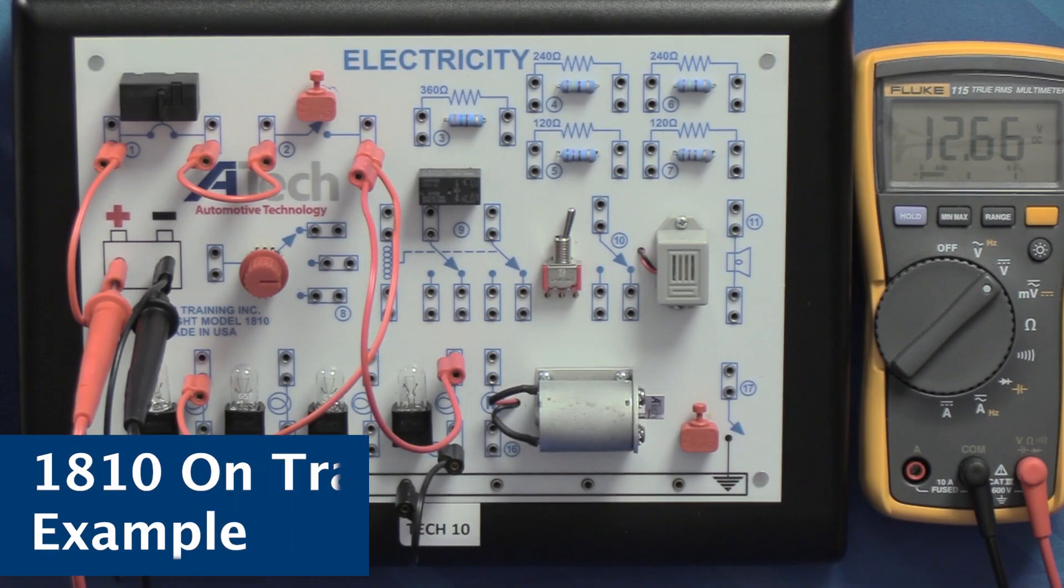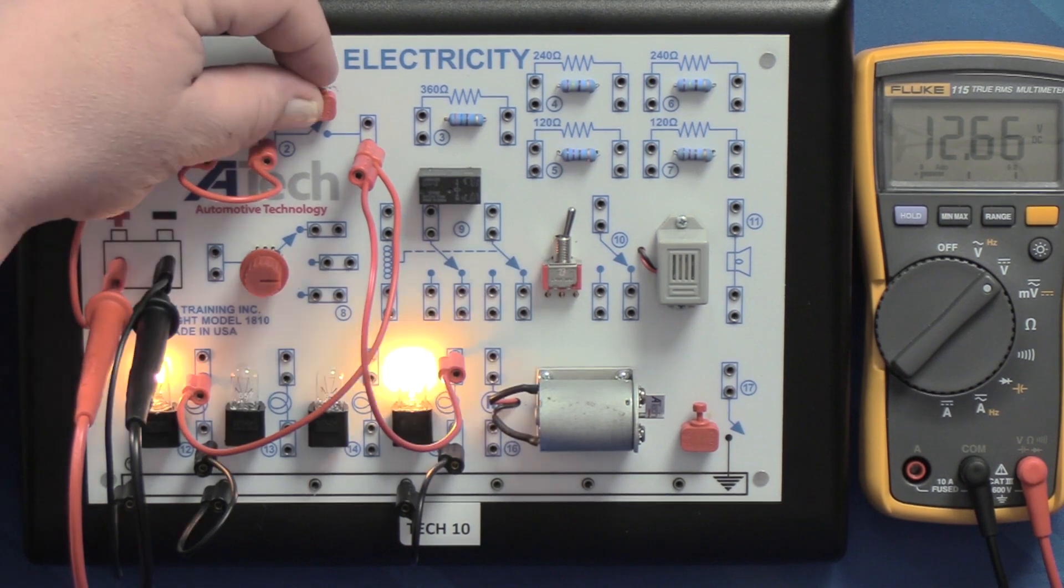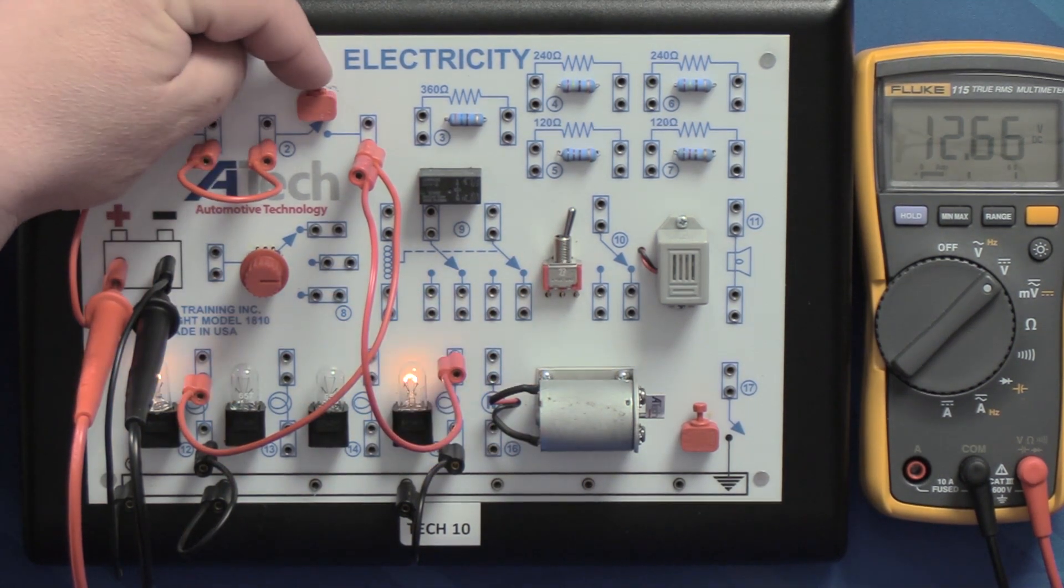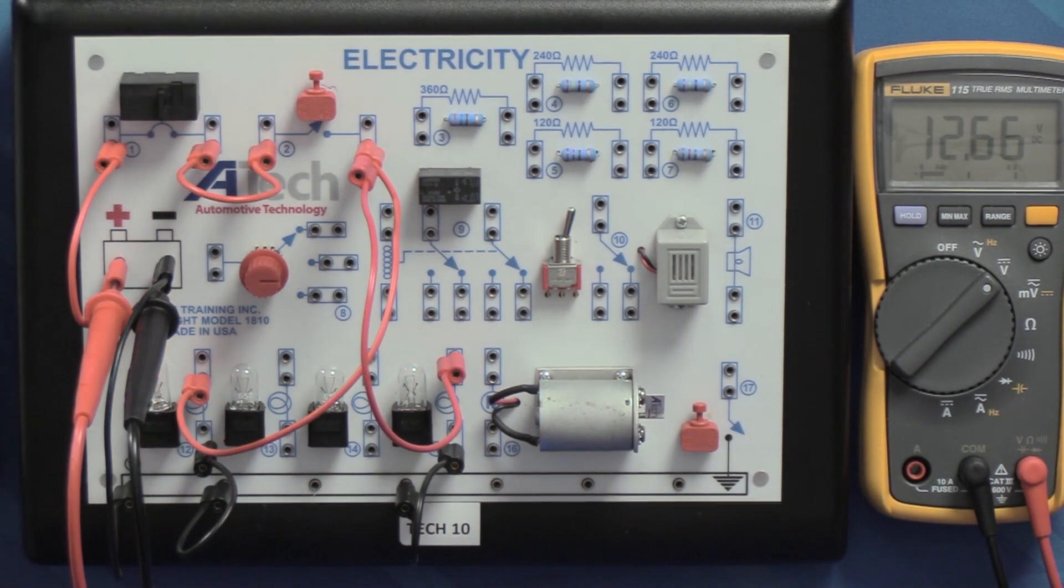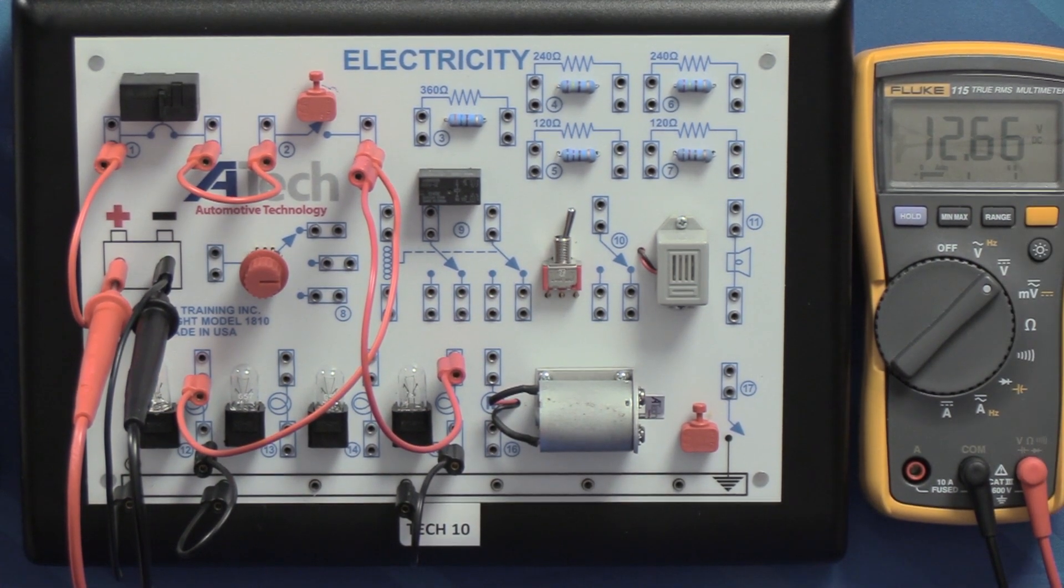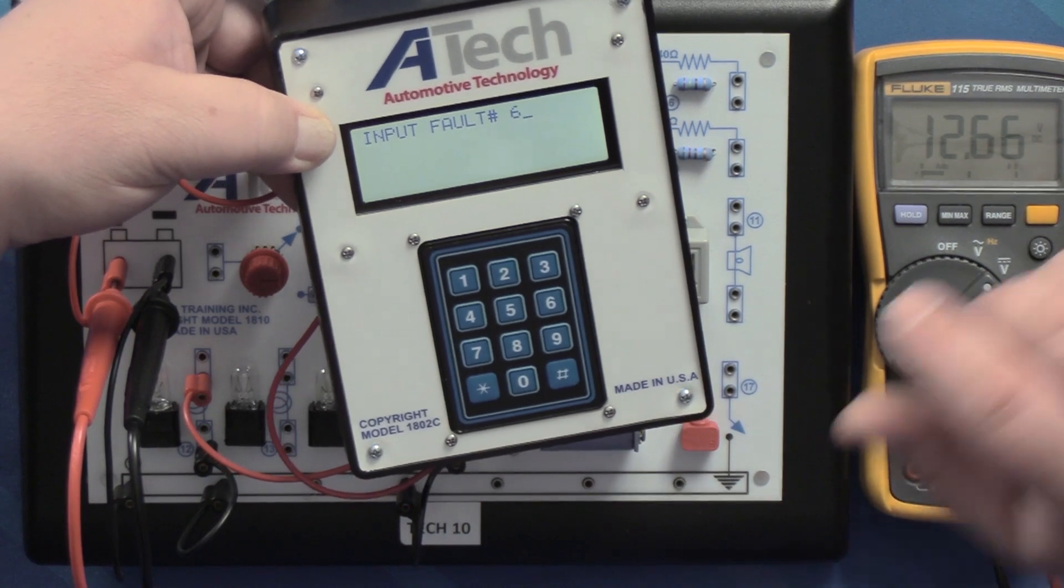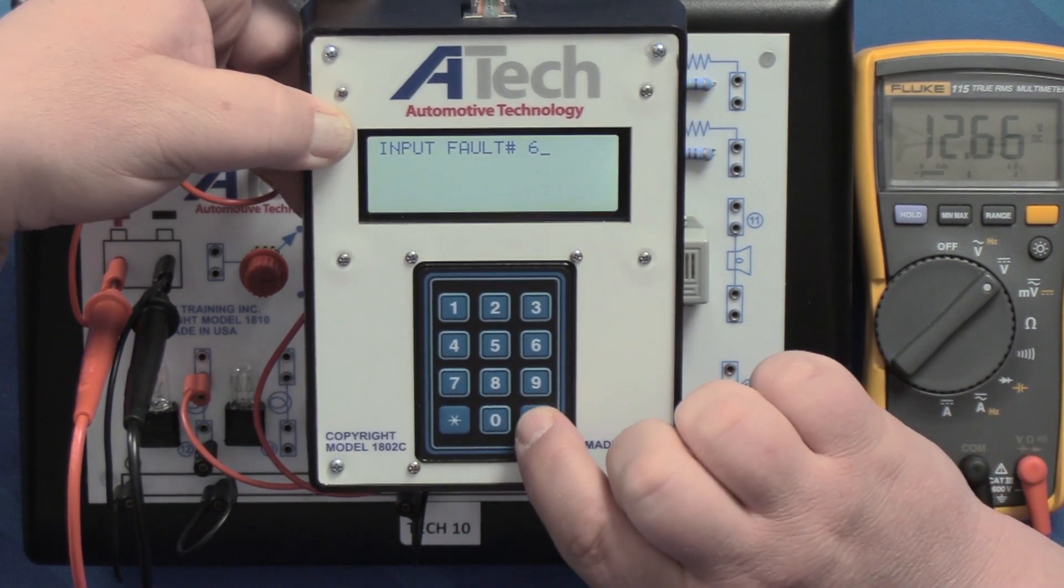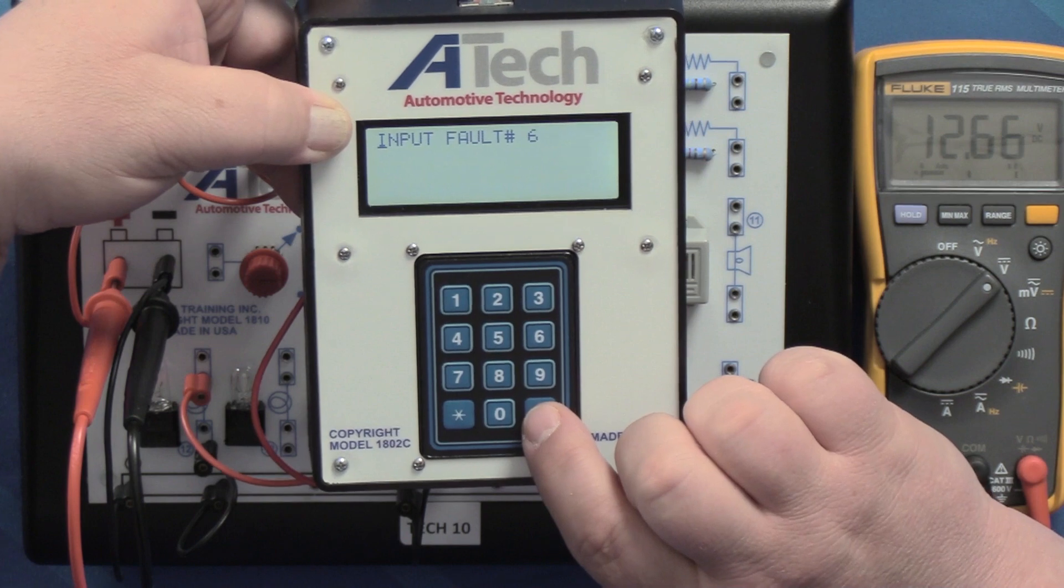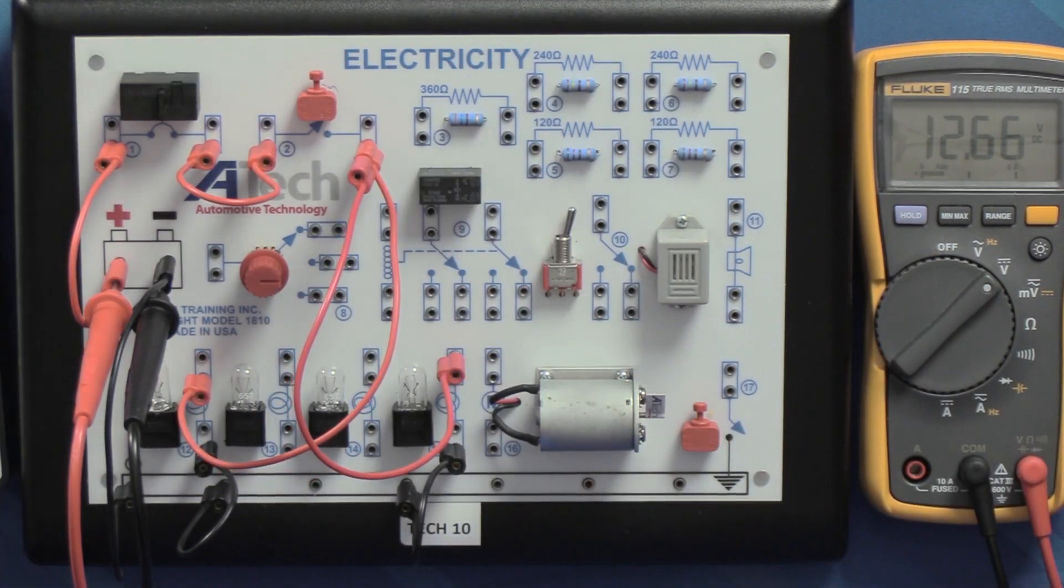We're going to take just a second to demonstrate the faulting capabilities of our 1810 trainer. Pictured up here I have a very basic, we'll call this a brake light circuit. When I hit the brake light switch up top, that makes both my left and right brake light bulbs come on. And if you notice here, checking source voltage, 12.66 volts, it's always the first step in electrical diagnosis. I'm going to slide my keypad in here, I've got my fault set up, we're going to insert fault six, press that pound key, that's going to go ahead and get that fault inserted for us.